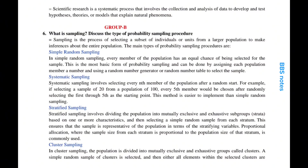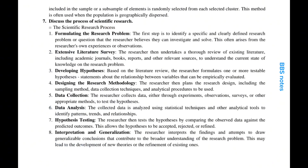In cluster sampling, the population is divided into mutually exclusive and exhaustive groups called clusters. A simple random sample of clusters is selected, and then either all elements within the selected clusters are included in the sample, or a subsample of elements is randomly selected from each selected cluster. This method is often used when the population is geographically dispersed.